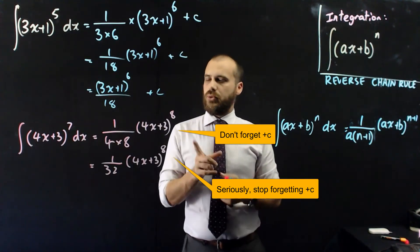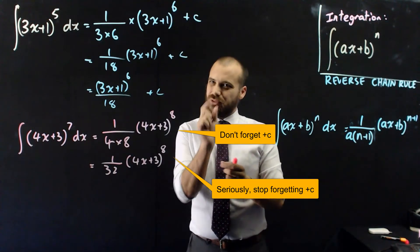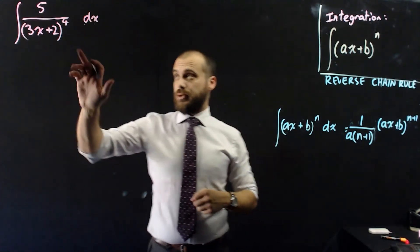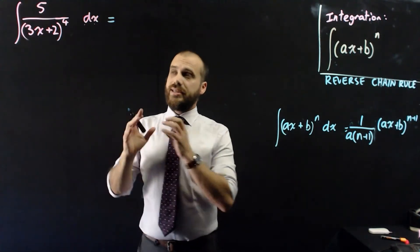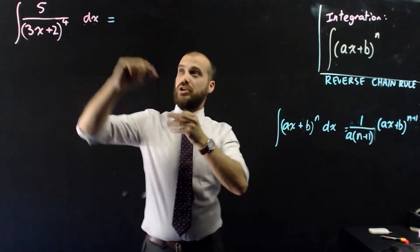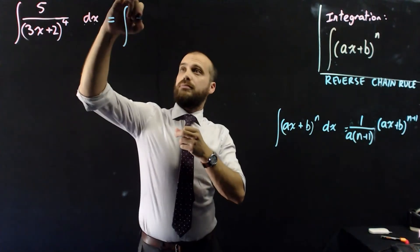I'm just going to do one more just so we can look at a few little key components. So it's the integral of 5 over 3x plus 2 to the power of 4 with respect to x. I cannot deal with something on the bottom of a fraction, so if I brought it to the top, my life would be much, much easier.